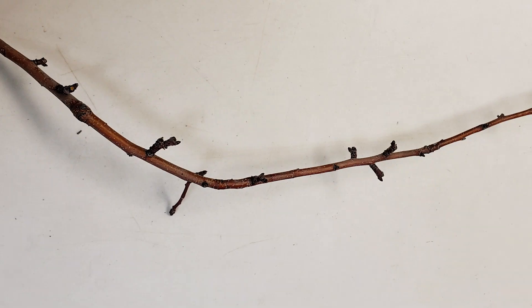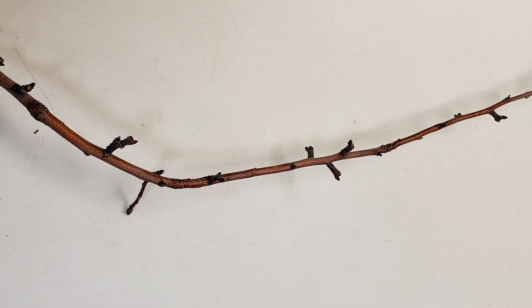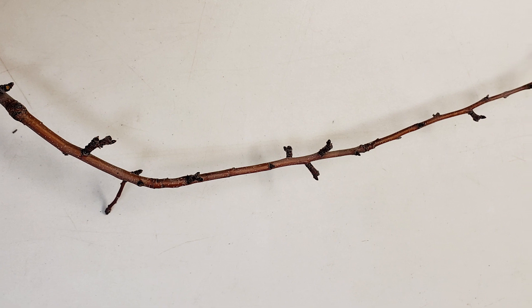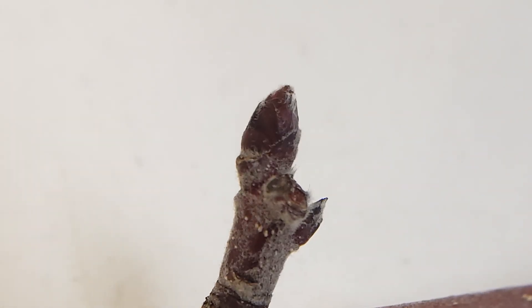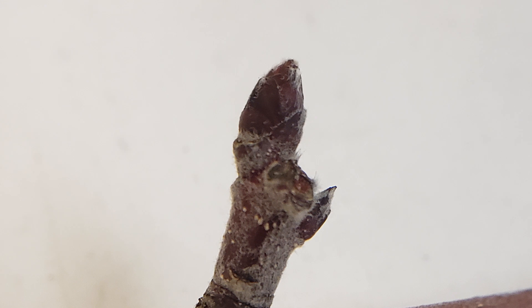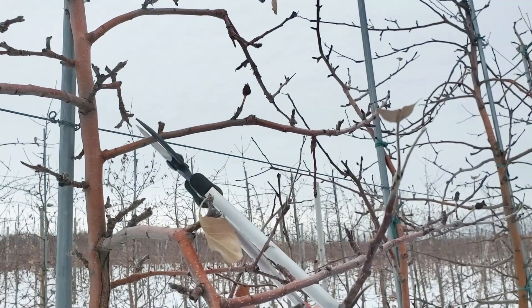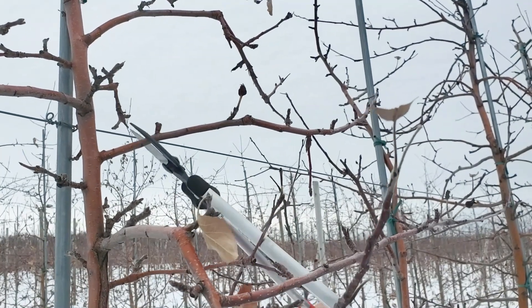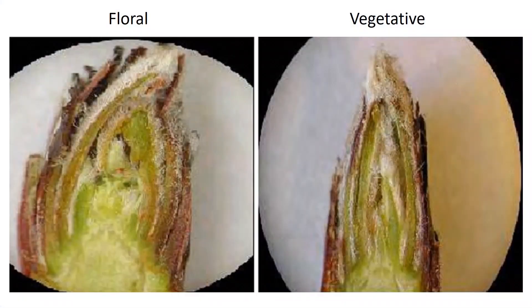Next, determine the percentage of buds in the block that are floral to adjust your target bud load. Vegetative buds will not produce fruit, so you want to make sure you have enough floral buds. Collect two medium-sized branches from each of three representative trees per block. Cut open each bud on each spur on these branches and determine whether it is a floral or a vegetative bud.